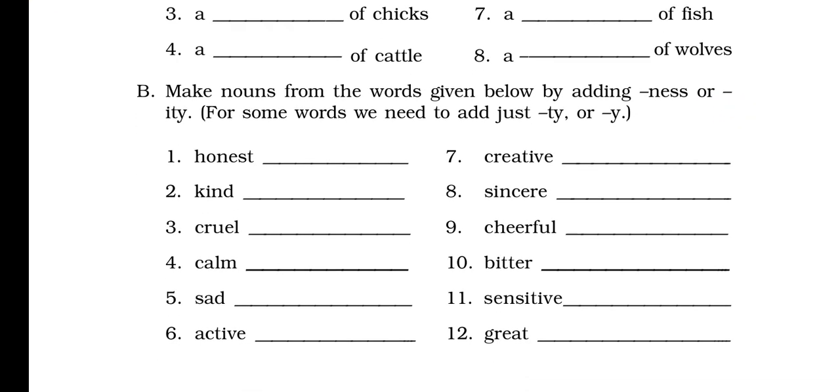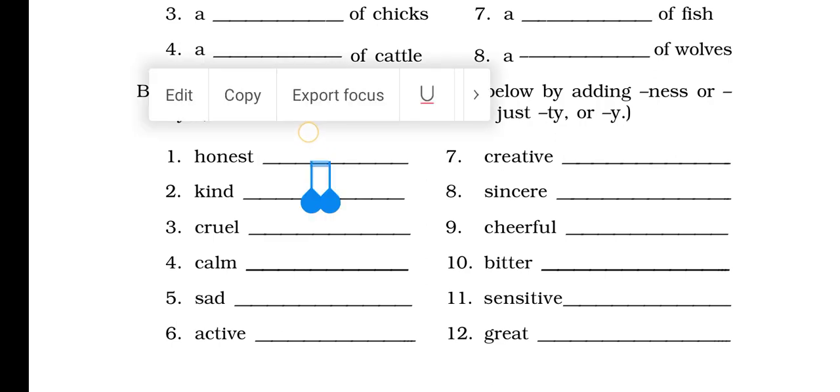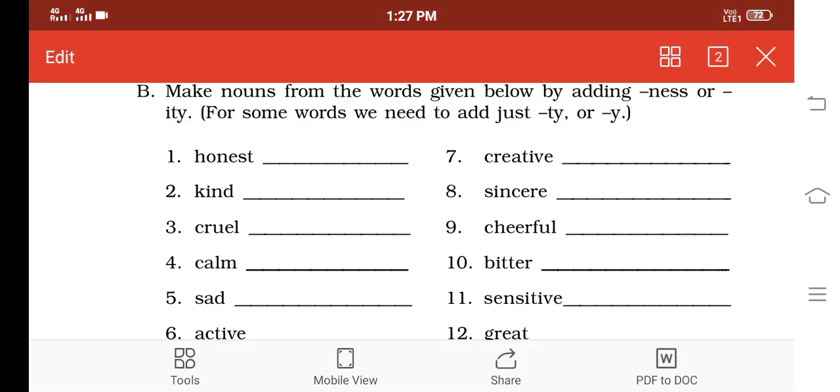Then the next one: making nouns using -ness or -ity or -ty or -y. We have to make nouns. The first word is given: honest. We have to complete that into a noun. Add -ty or -ness to make nouns. The first one is honest, so just add a y there and you will get the noun 'honesty.'